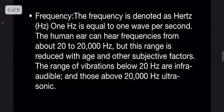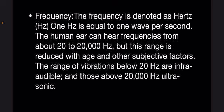Next, frequency. Frequency is denoted as Hz. 1 Hz is equal to 1 wave per second. The human can hear frequencies from about 20 to 20,000 Hz, but this range is reduced with age and other subjective factors. Vibrations which are below 20 Hz are called infra-audible and those above 20,000 Hz are called ultrasonic.